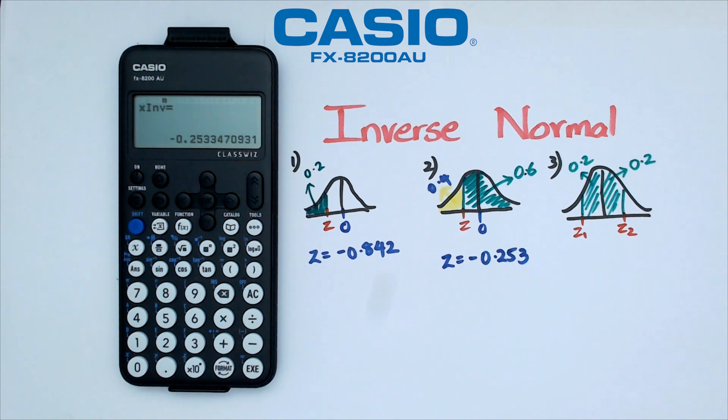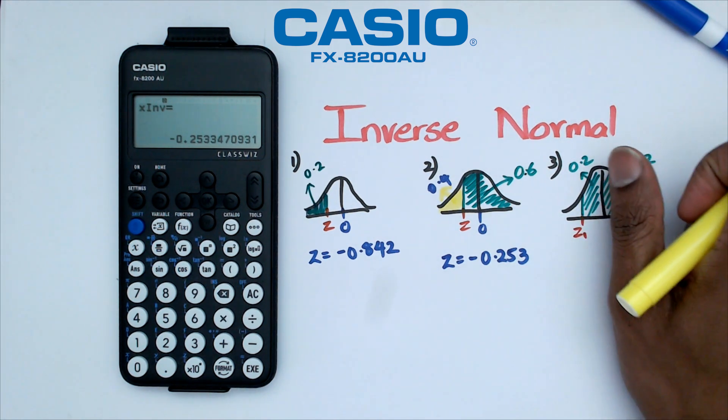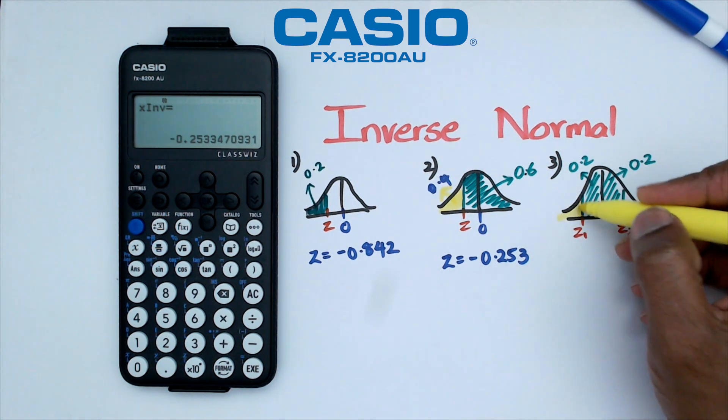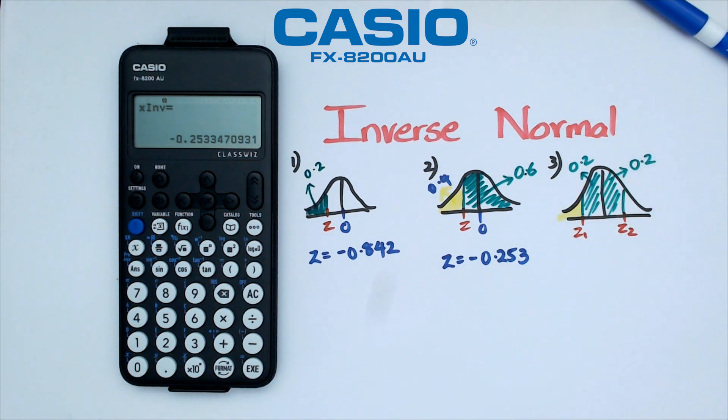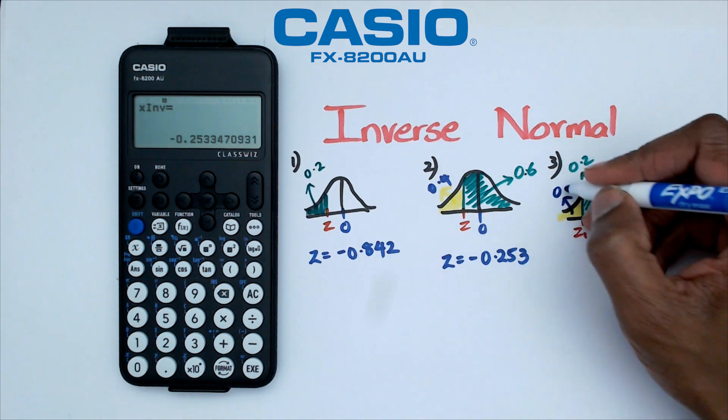Now on the odd occasion you get like question three where you've got 0.2 and 0.2 which make up 0.4 of the center area and to figure out what Z1 is, again we're going to have to do half of this normal curve because half of this normal curve is worth 0.5 which means the yellow area here is going to be 0.3.